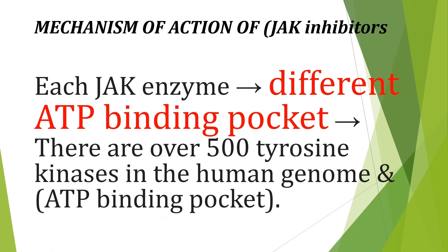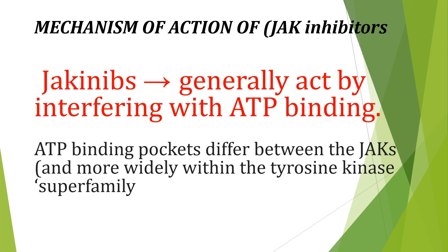JAK is a transphosphorylase enzyme — but where does it get its phosphate group? JAK brings the phosphate group from ATP, and each JAK has a different ATP binding pocket. We have over 500 tyrosine kinases in the human genome, and each one has its specific ATP binding pocket, so each one attaches to a specific binding pocket in ATP to obtain its phosphate group.